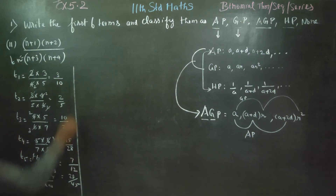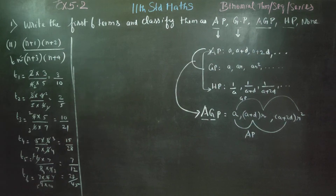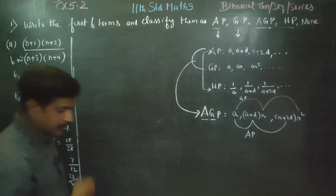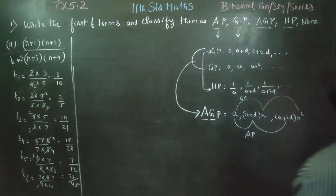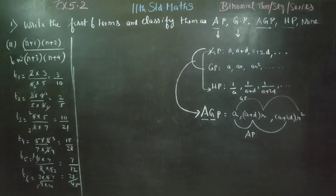Now the answers are ready. T1, T2, T3, T4, T5, T6 — which are 3/10, 2/5, 10/21, 15/28, 7/12, 28/45. This is the challenge: check whether this sequence is AP, GP, or HP.